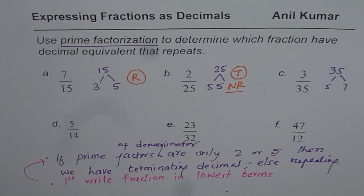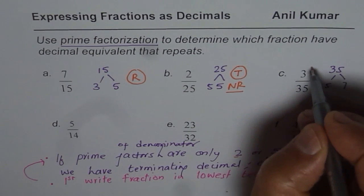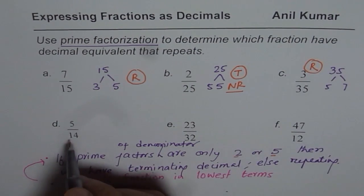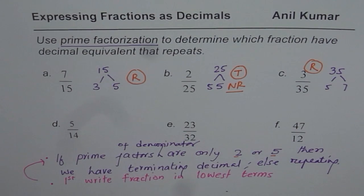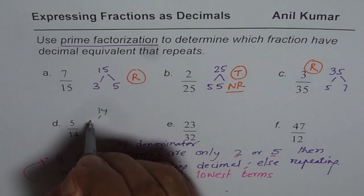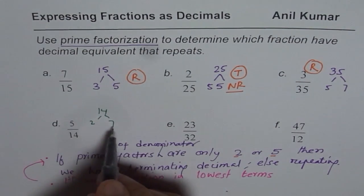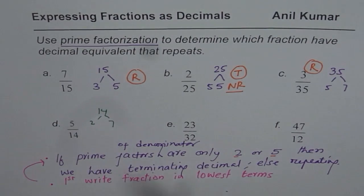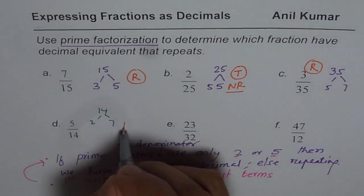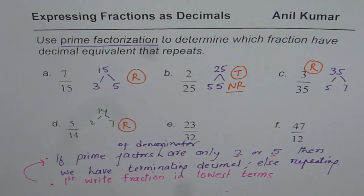Similarly we have 5 over 14. 14 could be written as 2 times 7. Since 7 is not in the 2 and 5 list, it will result into repeating decimal.